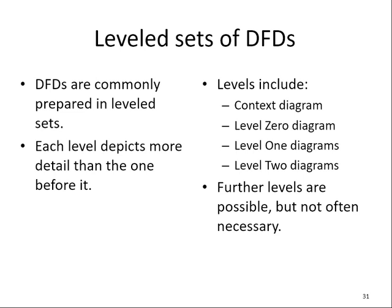DFD can show very simple or very detailed processes. It starts with a context diagram, which is the simplest and also the highest level of DFD. It provides readers with a summary level view of the system. Then we expand into level zero, level one, level two — each level adds more details. Further levels are possible but not often necessary.